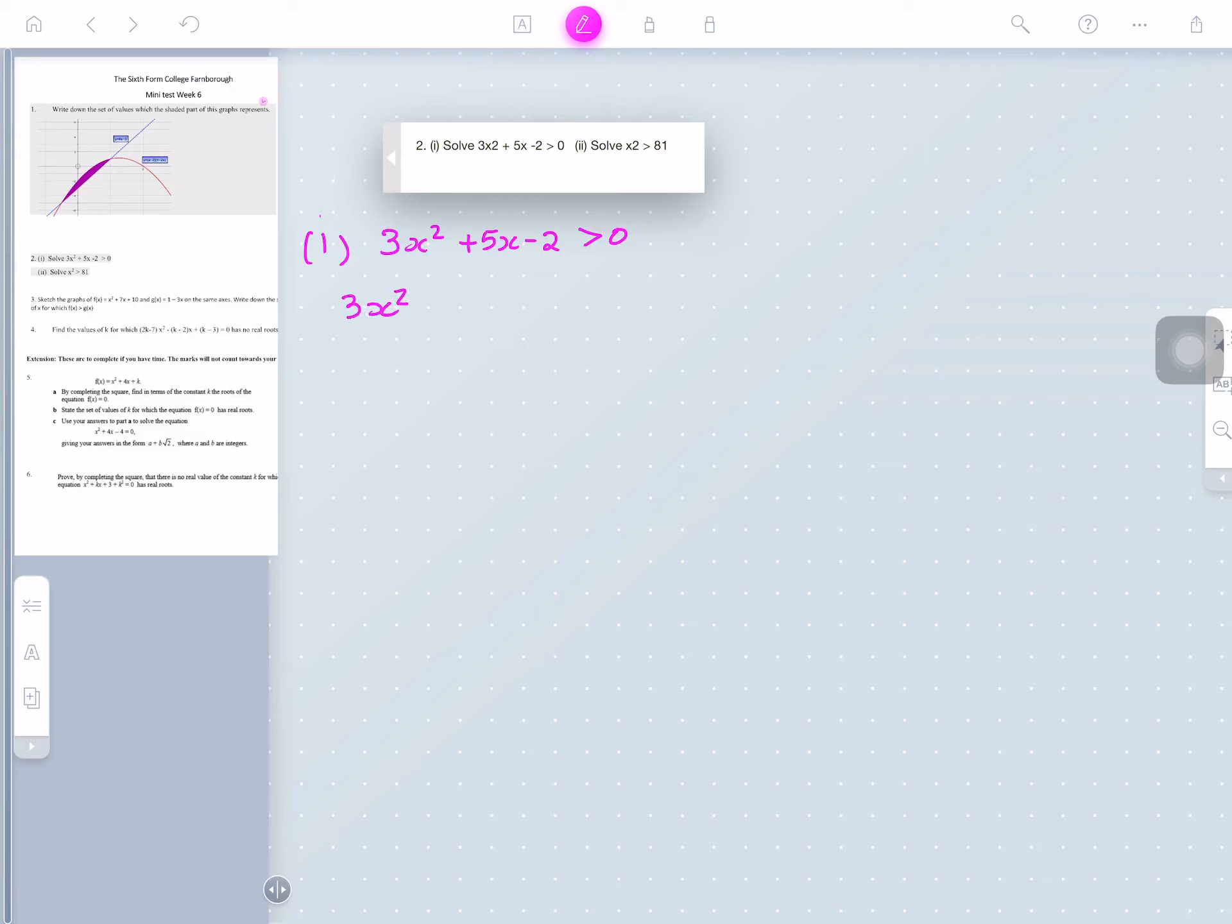3x squared plus 5x minus 2 is greater than 0. So to work out the x-intercept, you write down 3x squared plus 5x minus 2 equals 0. And then you factorize it to get 3x minus 1 times x plus 2 equals 0.